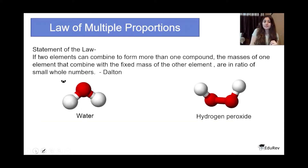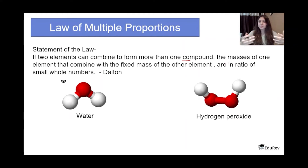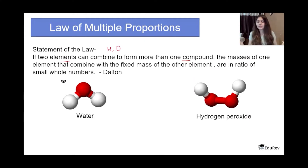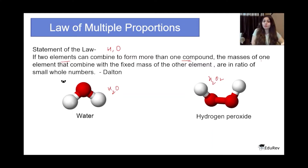The next law is the Law of Multiple Proportions. If two elements can combine to form more than one compound, the masses of one of the elements that combine with the fixed mass of the other element are in the ratio of simple whole numbers. For example, hydrogen and oxygen can combine to form water (H₂O), but they can also combine to form hydrogen peroxide (H₂O₂). So H₂O and H₂O₂ are two different compounds formed by the same two elements, hydrogen and oxygen.